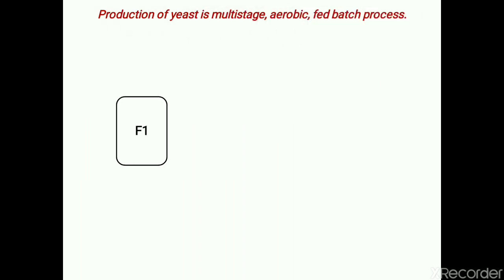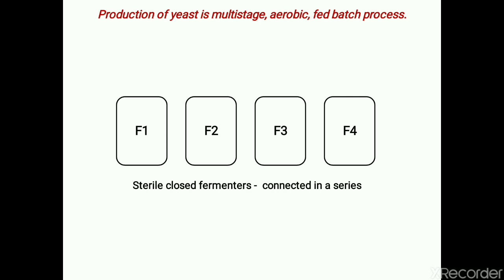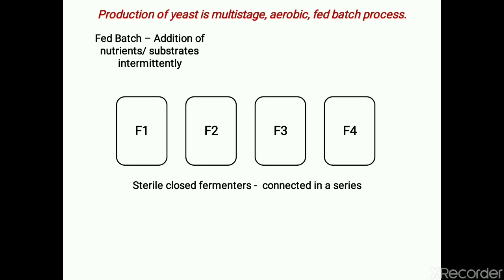Production of yeast is a multi-stage aerobic fed-batch process. In general, the production plant consists of fermenters connected in series. As shown in the figure, four fermenters are independently operated as sterile closed fermenters connected in series. It is a fed-batch process — we have learned about batch and continuous fermentation; fed-batch simply means feeding a batch fermenter, i.e., intermittent addition of fresh nutrient medium or substrate after a periodic interval.